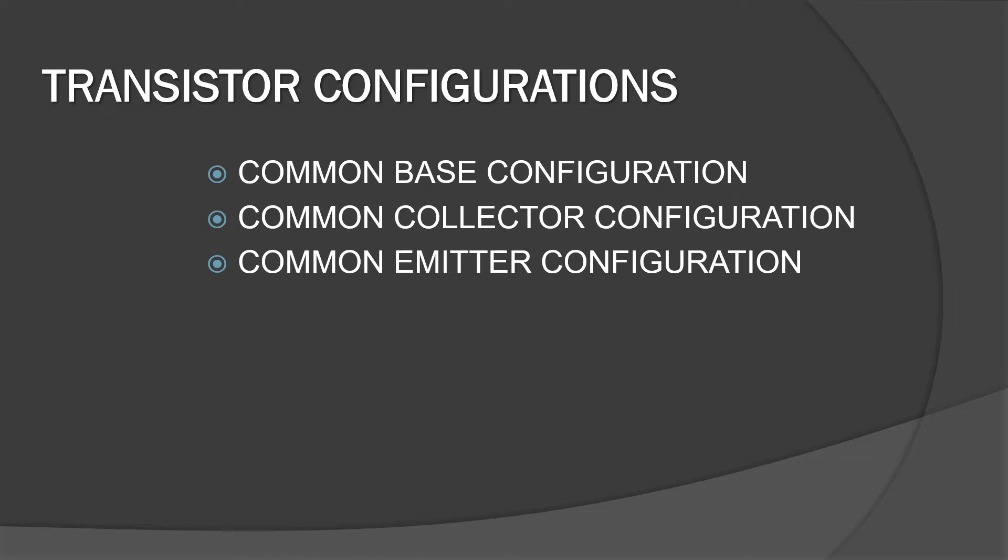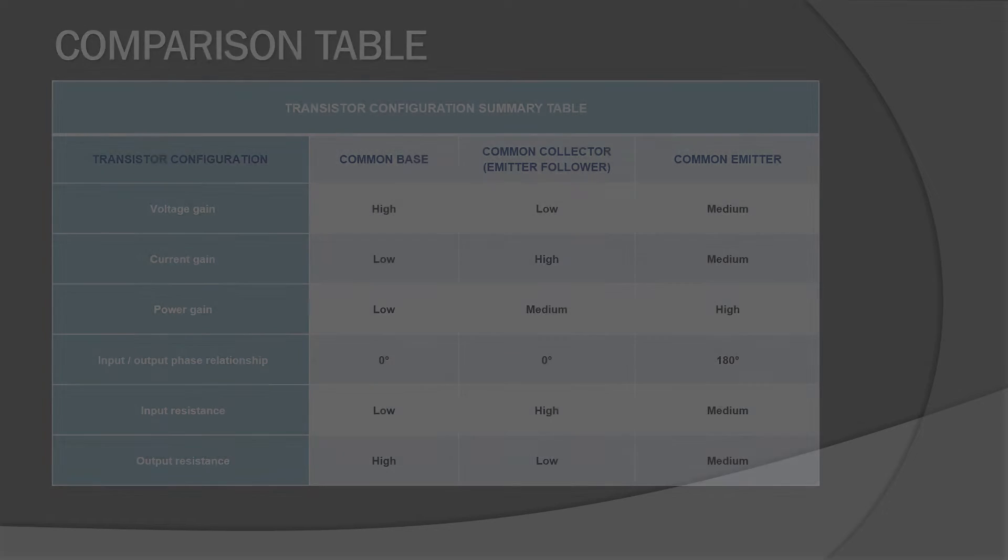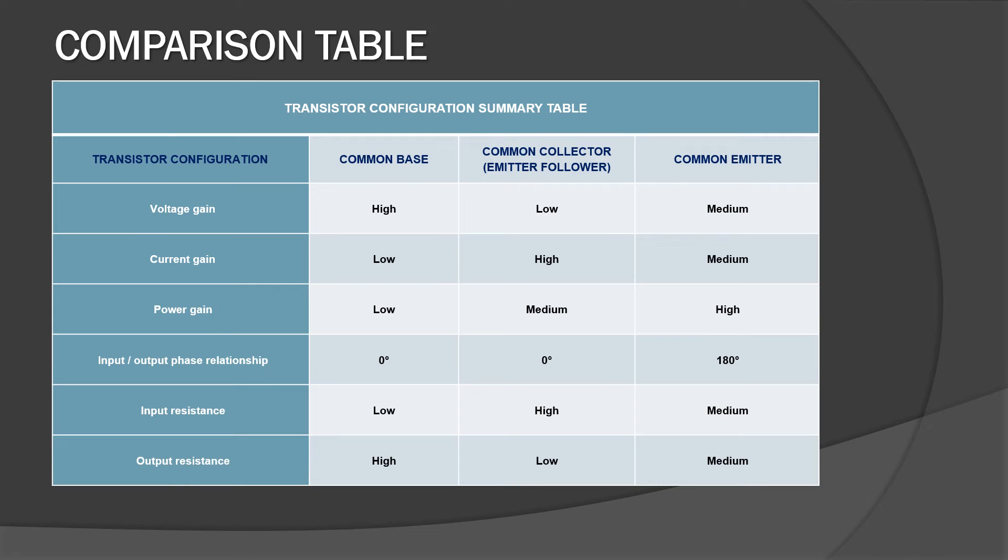There are three types of Transistor Configurations: Common Base, Common Collector, and Common Emitter Configurations. This is the comparison table of these three configurations.